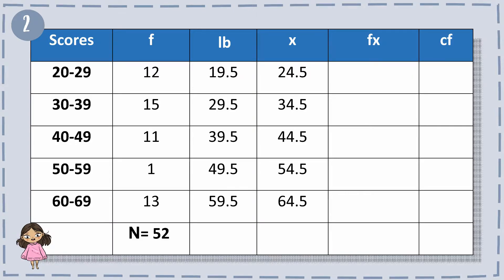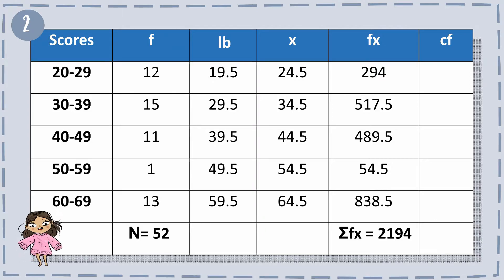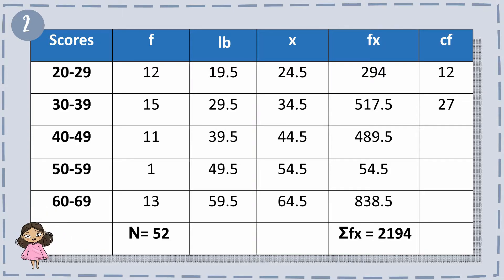For fx: 12 times 24.5 equals 294, 15 times 34.5 equals 517.5, 11 times 44.5 equals 489.5, 1 times 54.5 equals 54.5, and 13 times 64.5 equals 838.5. The summation of fx is 2,194. For cf, we have 12, 27, 38, 39, 52. Remember that the last value of cf must match the summation of f.